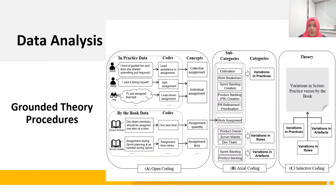In this study, we applied Strauss and Corbin's version of Grounded Theory, which comprises three data analysis procedures: open coding, axial coding, and selective coding. The image here presents how we applied these procedures in the study, but the details can be found in the paper.